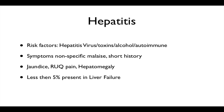Only less than 5% will present in fulminant liver failure, meaning flap, encephalopathy, and all the other signs and symptoms seen in liver failure. If symptoms progress for longer than 6 months, this would be known as chronic hepatitis.